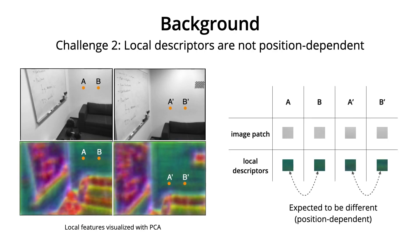Without repeatable interest points, it's impossible to find correct correspondences even with perfect descriptors. Second, the local descriptors are also not position-dependent, which means that although point A and B are on different locations of the image, the extracted descriptors are similar since there's no difference in the local image appearances between these two regions on the white wall. As a result, the similar descriptors can be incorrectly matched, which will introduce error to the final pose computation.